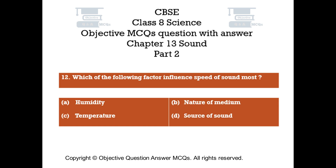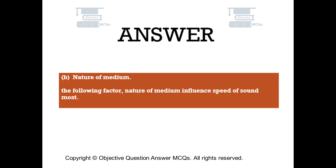Question number 12. Which of the following factors influences the speed of sound most? Option A: Humidity. Option B: Nature of medium. Option C: Temperature. Option D: Source of sound. The right answer is option B — Nature of medium. Nature of medium is the factor that influences speed of sound most.